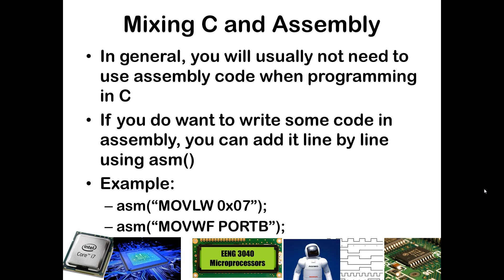So for example, if you wanted to go ahead and put a literal value into W, you could do that this way with asm, open paren, double quote, move literal into W, and then whatever that literal value would be, in this case, hexadecimal 7. Notice this dash is just a bullet on there that's not part of the code.